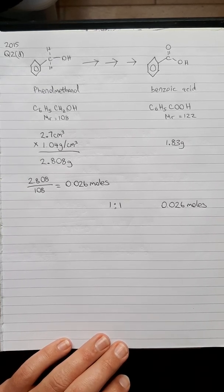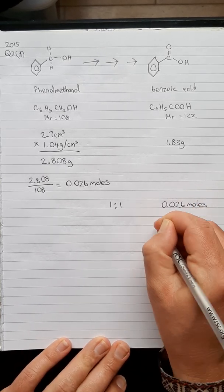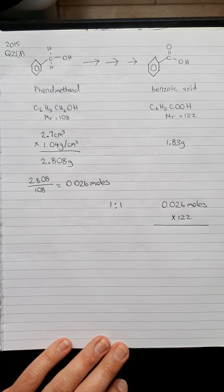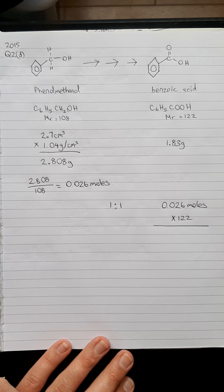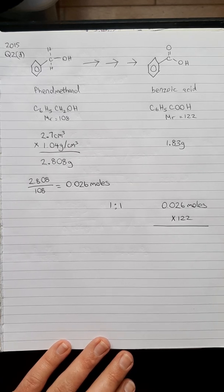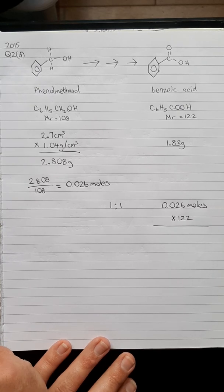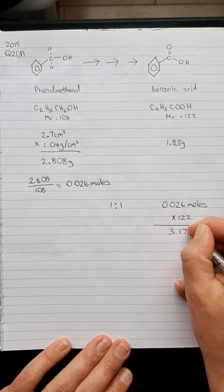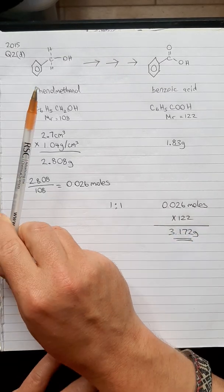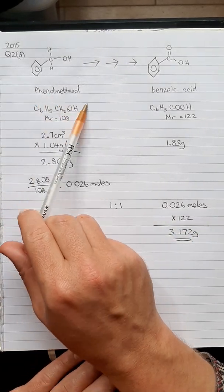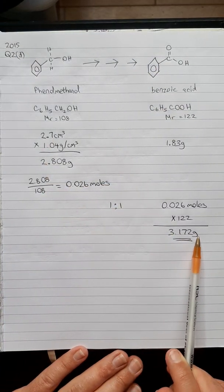What I might do is multiply this by the 122, and that will give us the grams of benzoic acid that we could have got in theory. This is 3.172 grams. In theory, if every single molecule of phenylmethanol was oxidized into benzoic acid, we should have got 3.172 grams of benzoic acid.